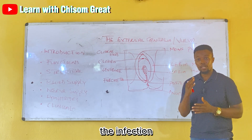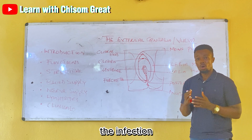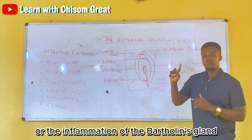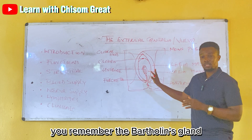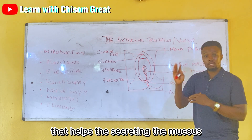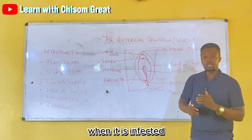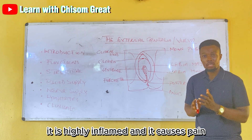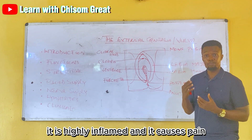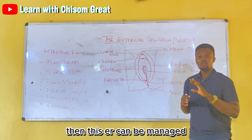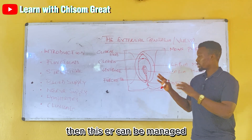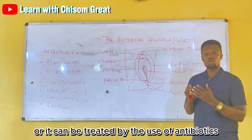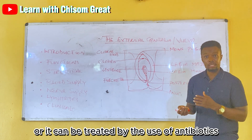The first clinical condition is Bartholinitis, which simply means the infection or inflammation of the Bartholin's gland. When infected, it becomes highly inflamed and causes pain. This can be treated with antibiotics; if left untreated, it may spread to other areas.